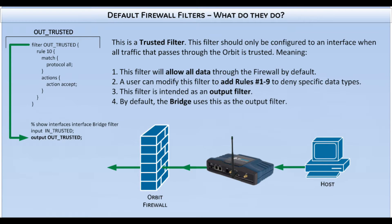Here is the OutTrusted filter. This filter should be used on interfaces connected on a local network. It will allow all data to pass through the firewall out of the Orbit, but the user also has the ability to add specific deny rules that will block unwanted outgoing traffic. The Orbit by default has this filter applied to the bridge interface.